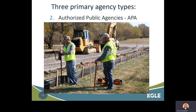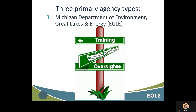Authorized Public Agencies, or APAs, are state and local agencies who are authorized to implement their own approved SCSC procedures related to earth changes. Examples of APAs include, but are not limited to, MDOT, DNR, County Road Commissions, and County Drain Commissioner offices. Lastly, there is EGLE, which provides training, compliance assistance, and program oversight.